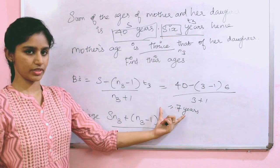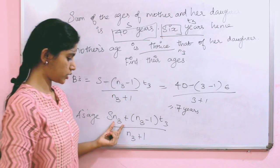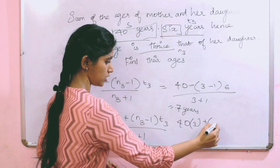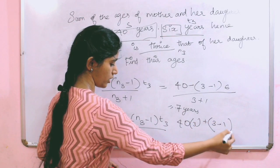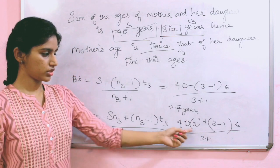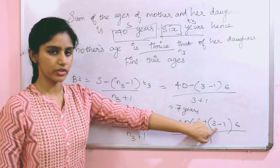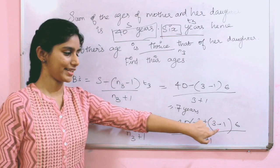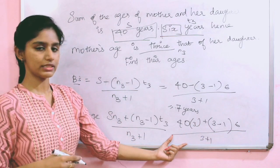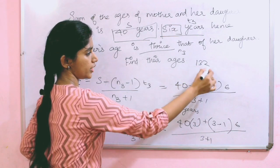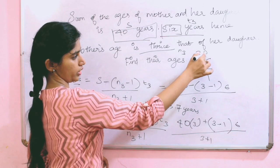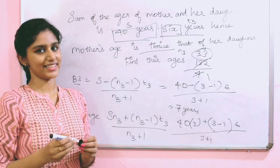What is A's age now? S into N3. 40 into N3 is 3, plus (3 minus 1) times T3, which is 6, divided by 3 plus 1. 4 times 3 is 12, so 120. Plus 6 into 2 is 12. 120 plus 12 is 132 by 4. 132 by 4 is 33 years. The mother's age is 33.